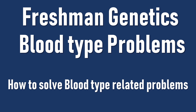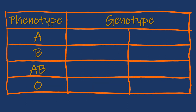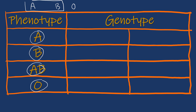Let us understand how to solve blood type related problems. According to the ABO blood grouping, there are four blood groups: A, B, AB, and O. The ABO blood grouping has three genes — gene A, gene B, and gene O (or gene H). Genes A and B are dominant, whereas gene O is recessive.